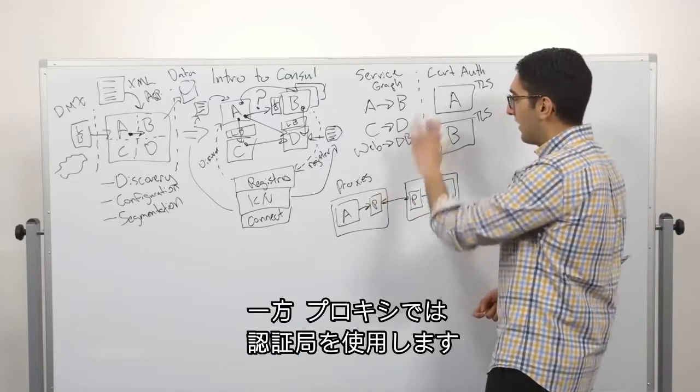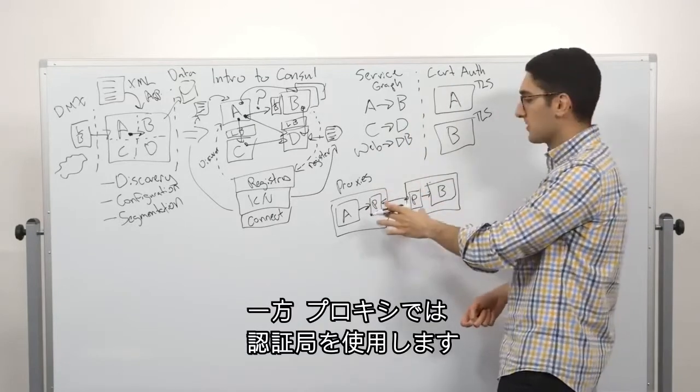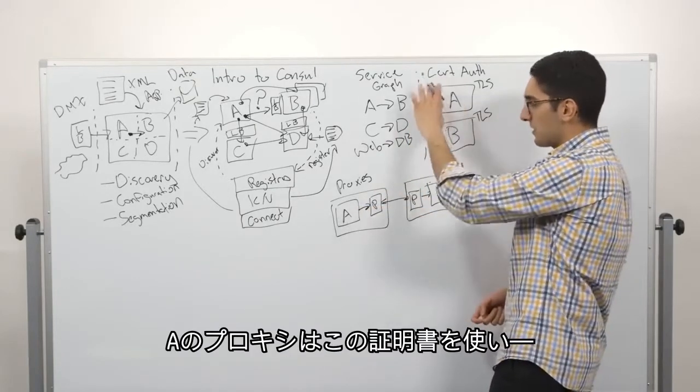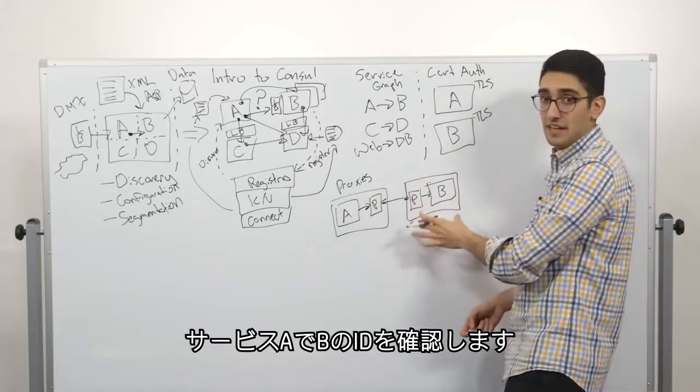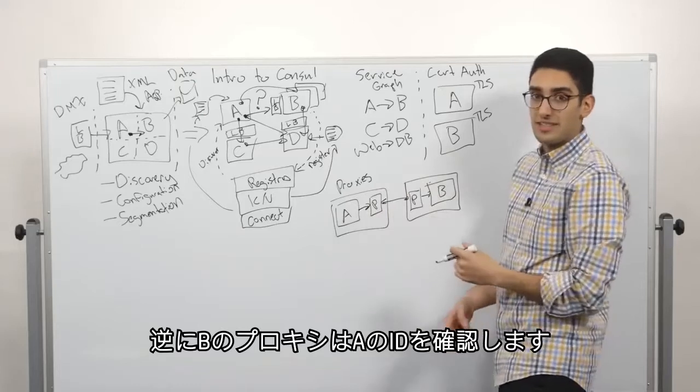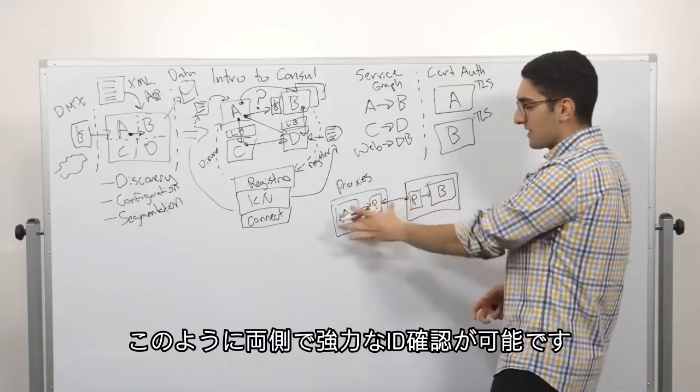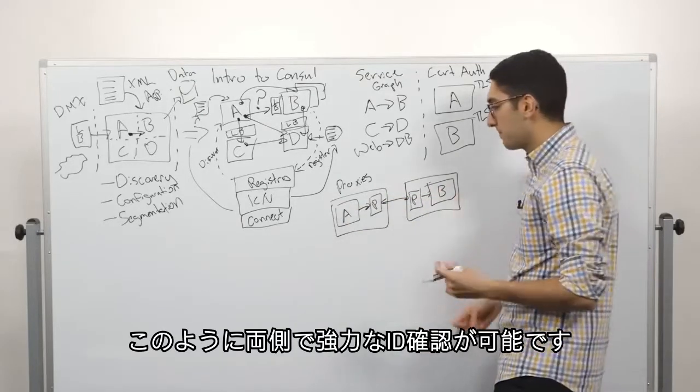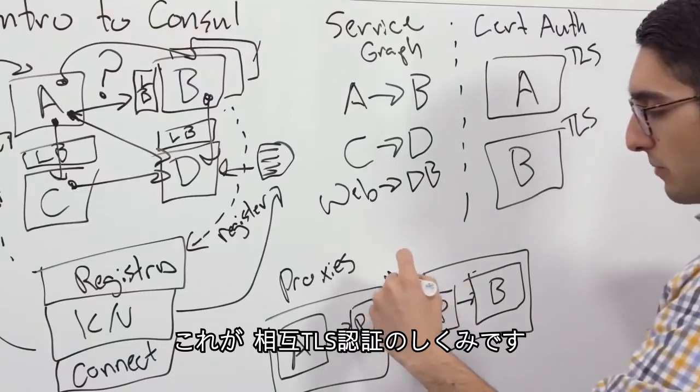The proxies, on the other hand, are using these certificate authorities. So the proxy on side A will use this certificate to say, I am A, and it'll verify the identity of B and vice versa. The proxy on B's side will verify that it's talking to A. So now we get this strong sense of identity between the two sides. And this is being done with mutual TLS.